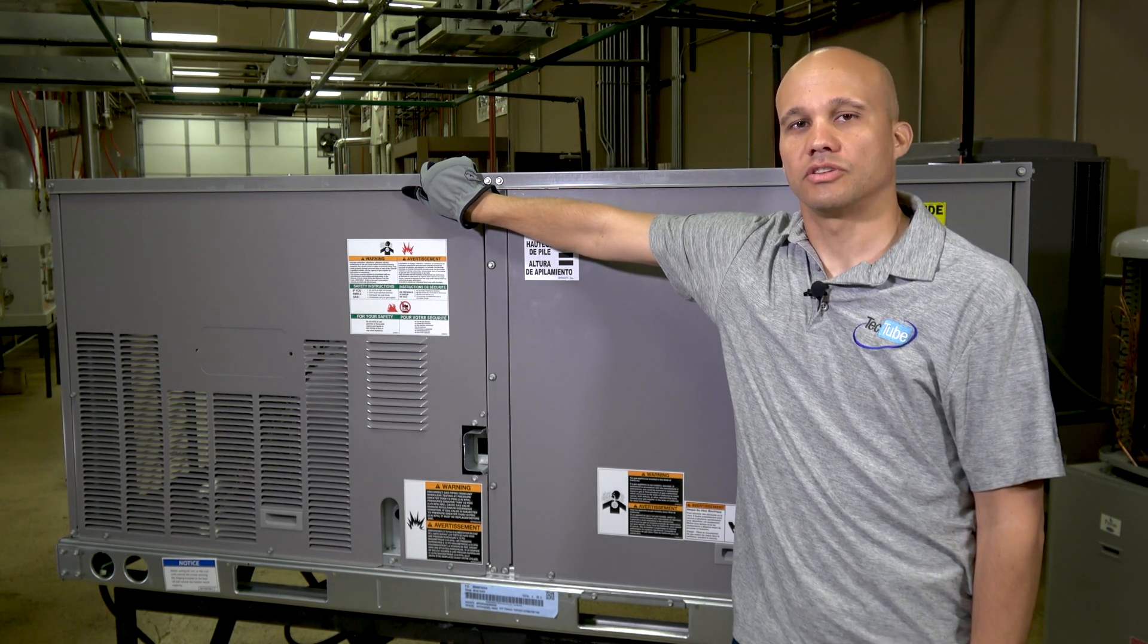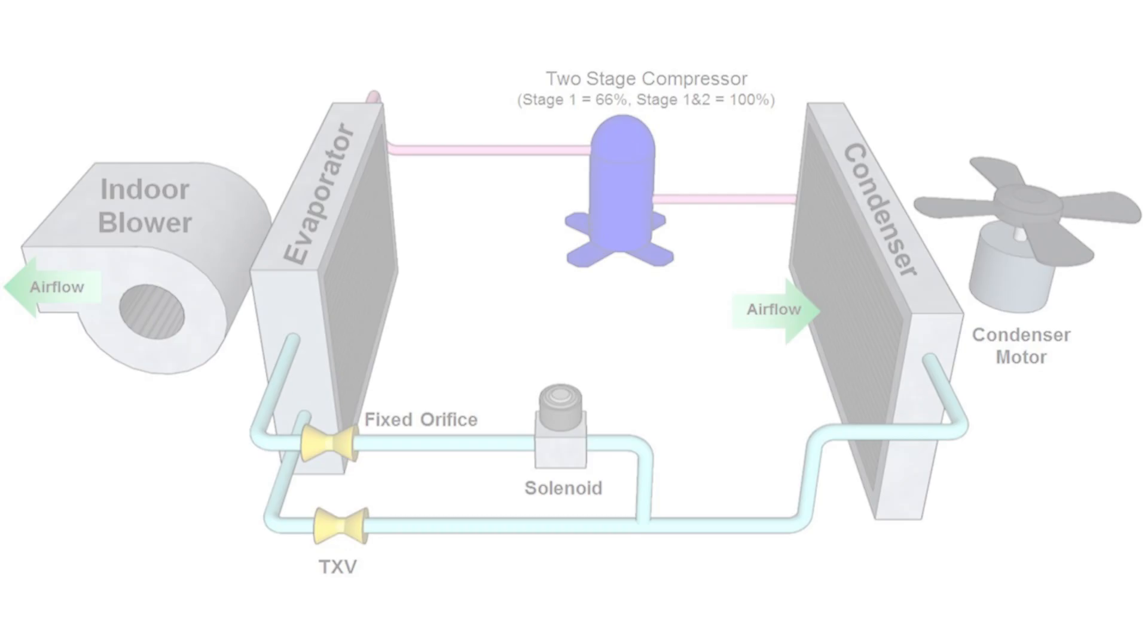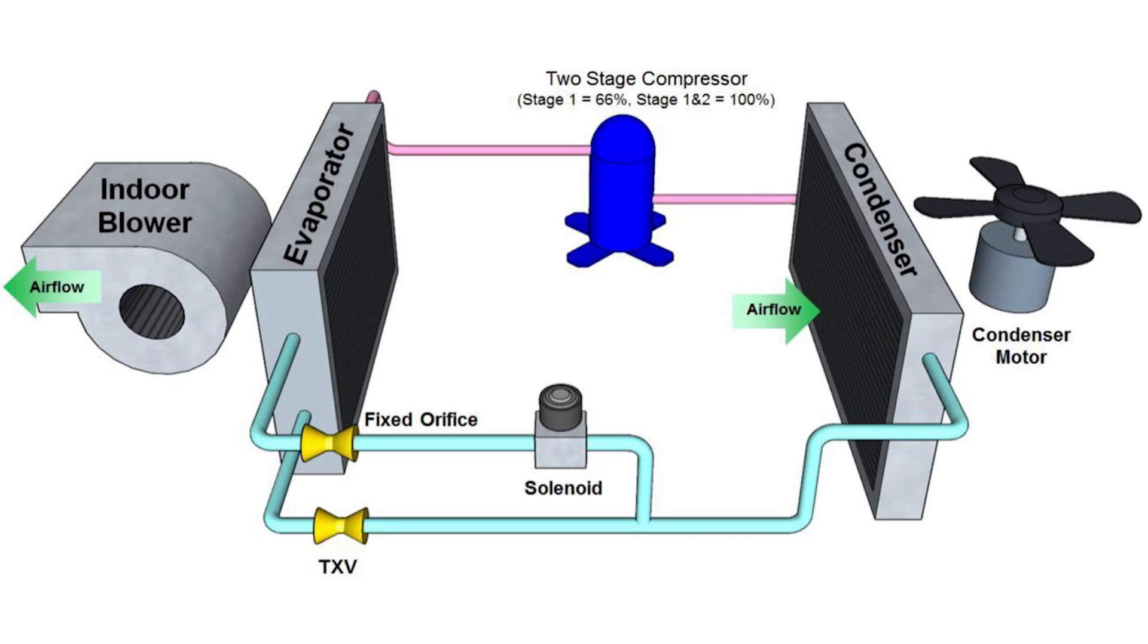These come in single and dual stage units. On the two stage unit, we're going to use a two-speed compressor and we're going to run it at the typical 67 and 100 percent capacity like you'd see on a residential type system.